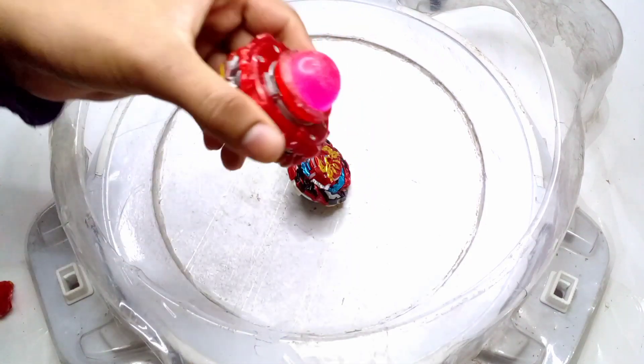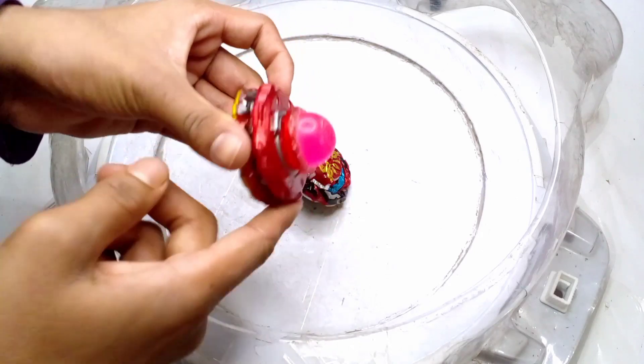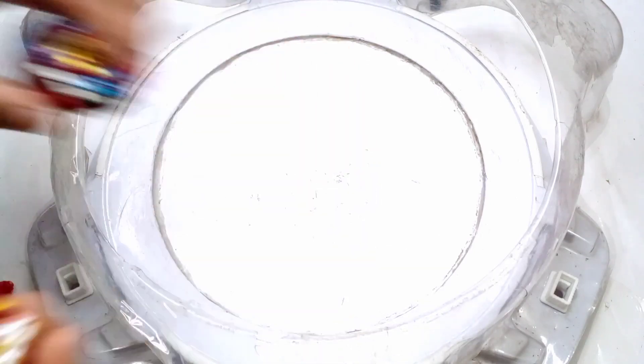Now I'm going to use this driver on World Spriggan because World Spriggan has a free-spinning chassis. You can see the 2B chassis here. Let's do this.